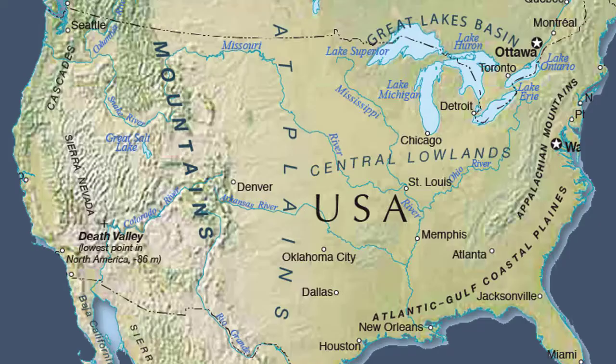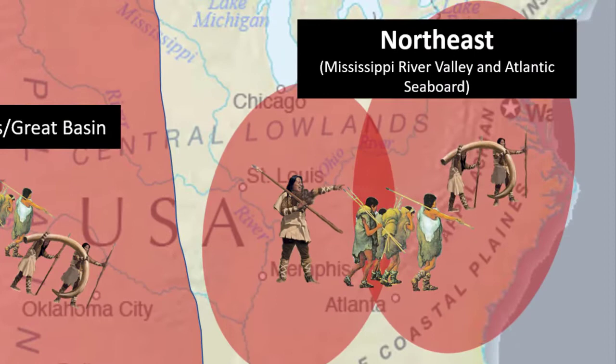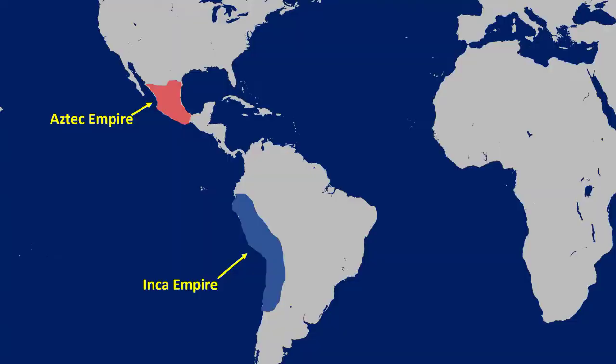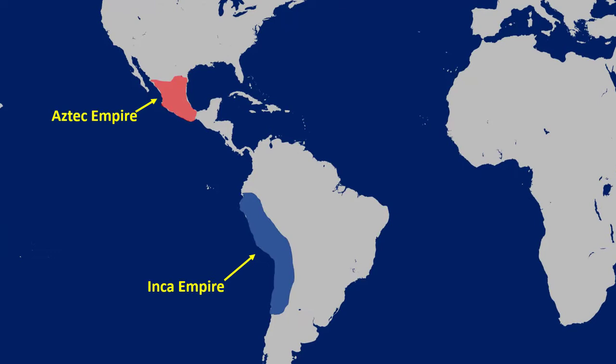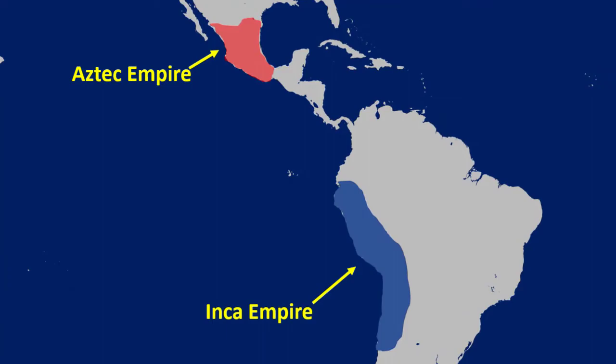The Indians began developing regionally in the Pacific Northwest, the American Southwest which extends into present-day Mexico, the Great Basin and the Great Plains, and the Northeastern region, which includes the Mississippi River Valley and the Atlantic Seaboard. Powerful Indian empires developed, particularly in Central and South America — the Inca and the Aztec empires. These empires won't be the focus of this video, but the Incas' and Aztecs' cultivation of one particular crop became rather important to some areas in North America, and that crop is maize.